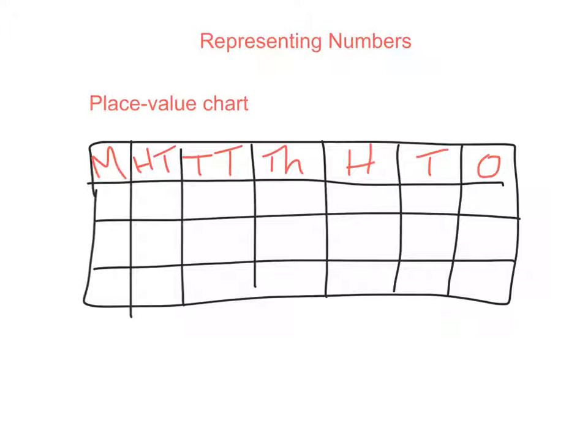Now that we have that great place value chart that Seamus drew, let's put some numbers in. What if I give you a number like 32,409? Well, remember, we want to start on the far right side.